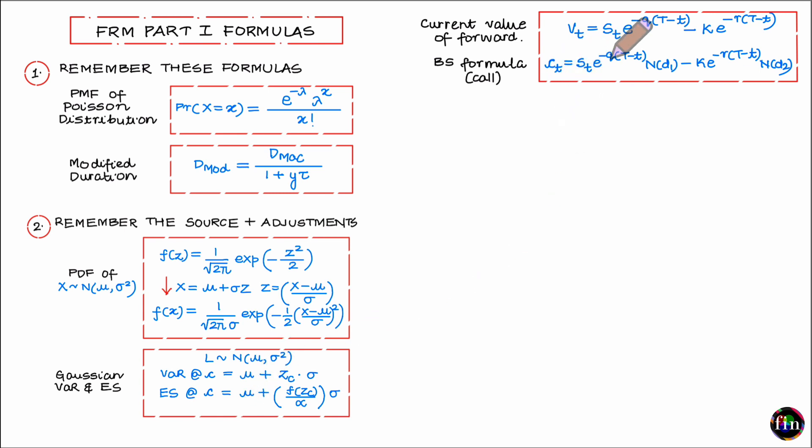Then if I were to take a look at these two formulas, this is the formula for the value of a forward contract. This is the formula, the Black-Scholes formula, for finding out the premium of a European call. Again you can see both these formulas, they are so similar to each other.